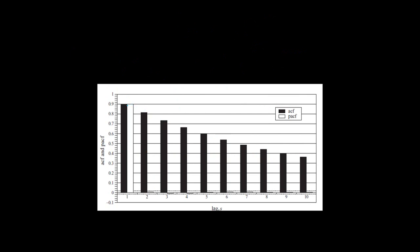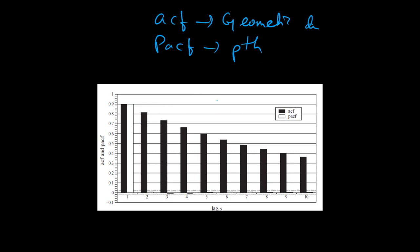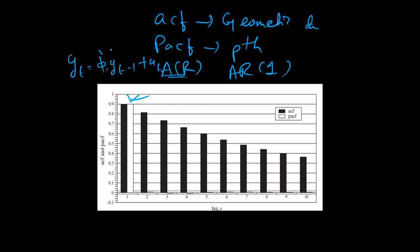In this next case, the black bar (ACF) is geometrically declining, so ACF is following a geometric decay. The PACF is significant only till the first lag — the Pth lag. Going by the rules, it's an AR process — specifically an AR(1) process because only the first lag is significant. It's positive, so it can be written as: Yt = φ₁·Y(t−1) + u(t), where the coefficient is positive because the Y-axis is positive.